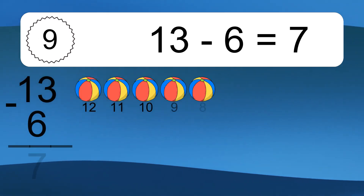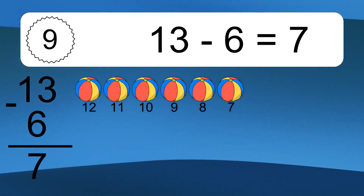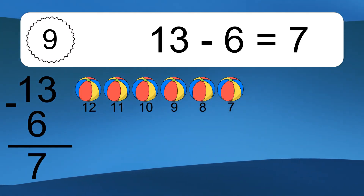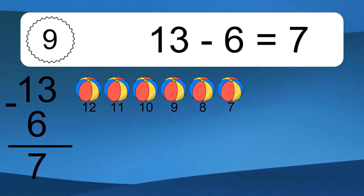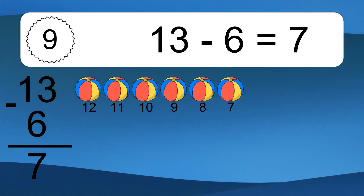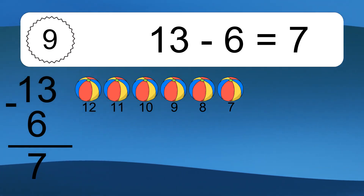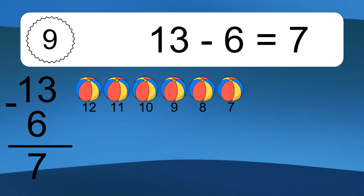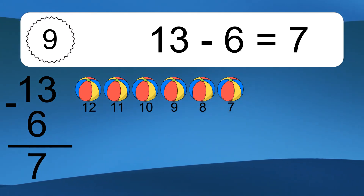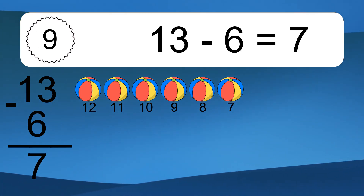13 minus 6 equals what? 13 minus 6 equals 7. Let's count it: 12, 11, 10, 9, 8, 7.